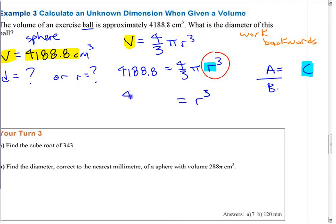I'm going to rewrite it. I'm going to say that r cubed is this number divided by four-thirds pi. So on your calculator, you can get what r cubed is.